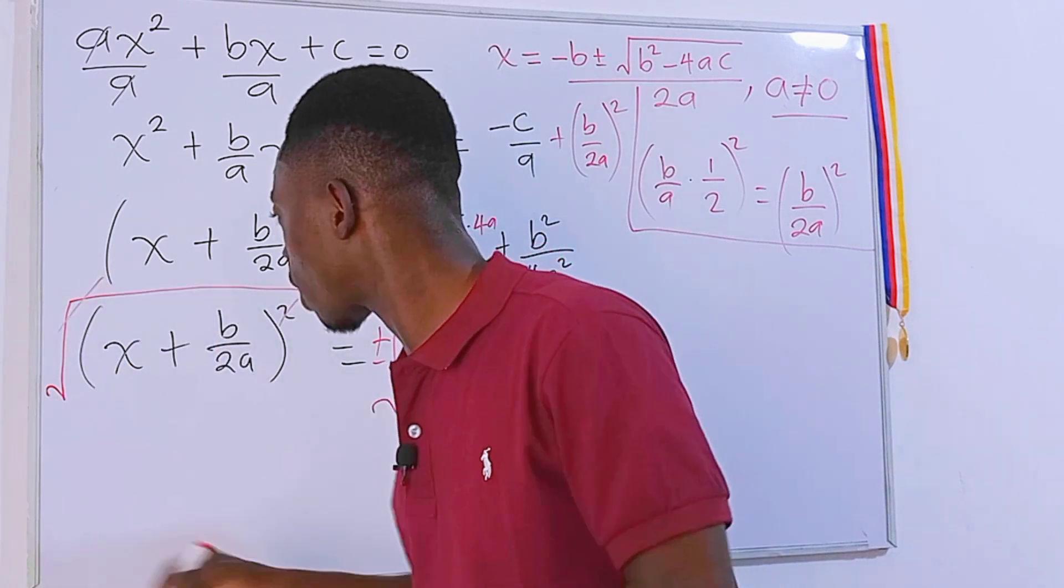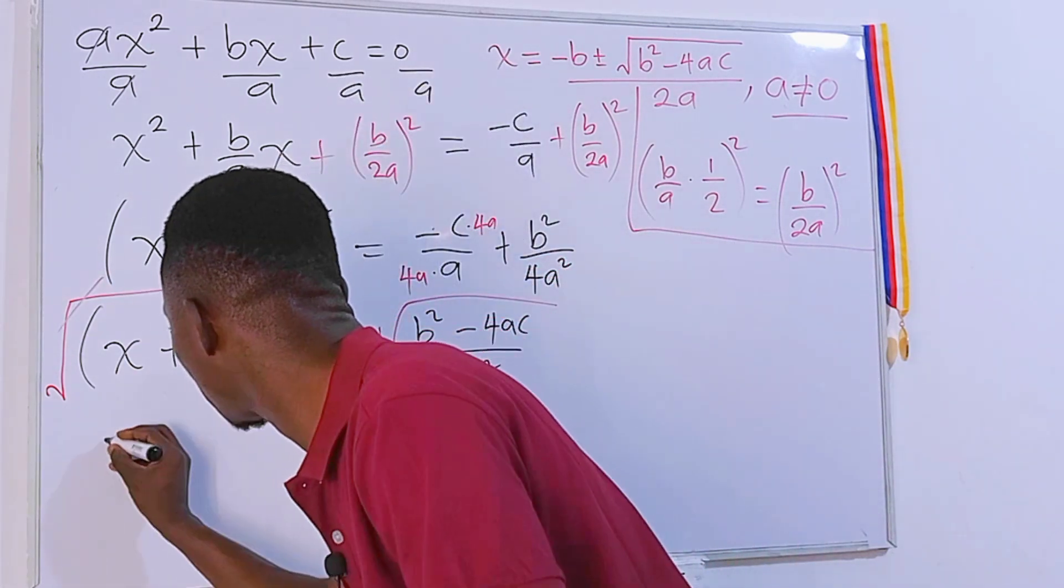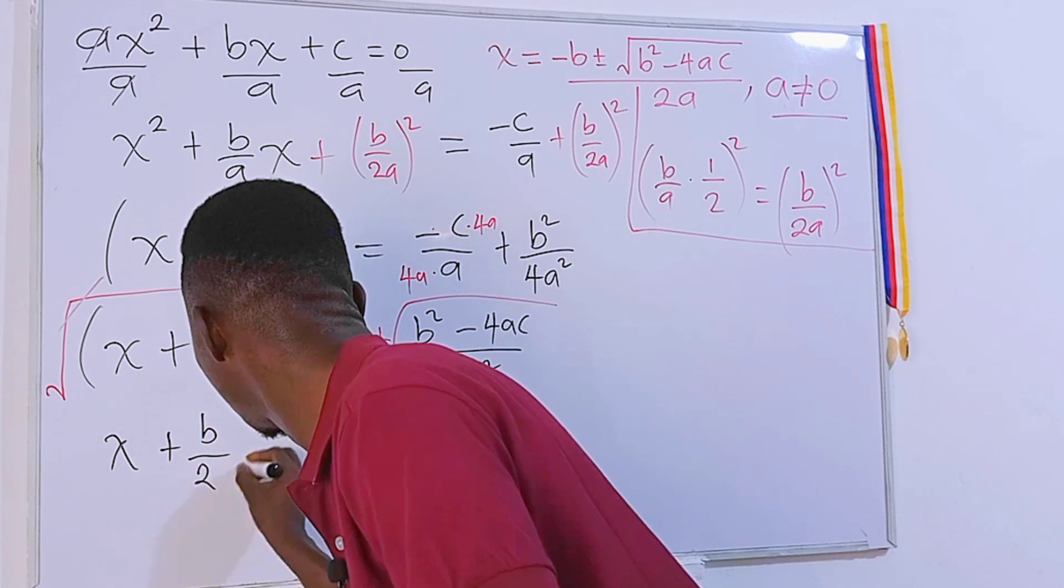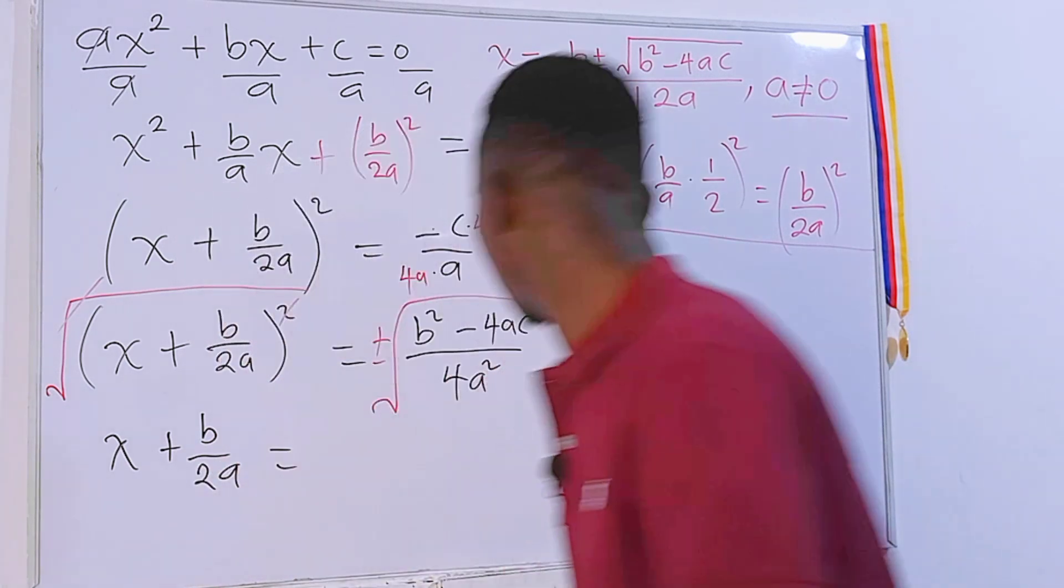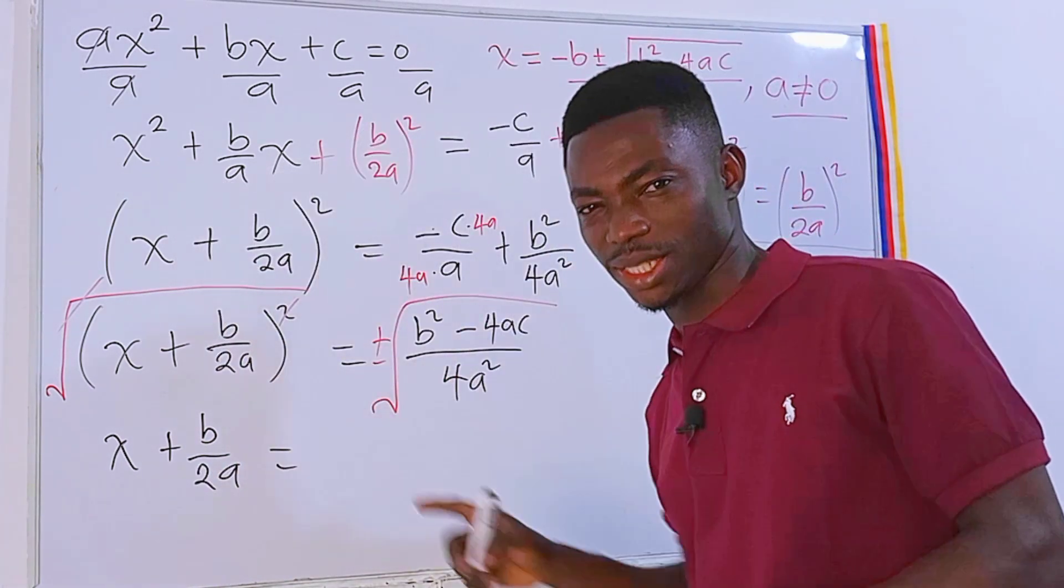This square and then the square root will go. Then on the left hand side we'll be left with x plus b over 2a. Then the right hand side, in fact we can simplify this this way. Check this out.